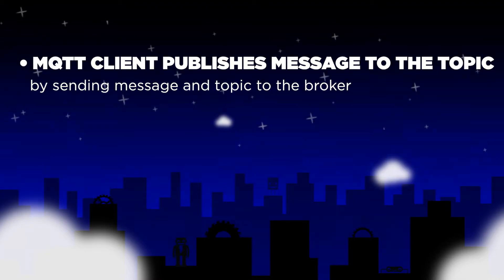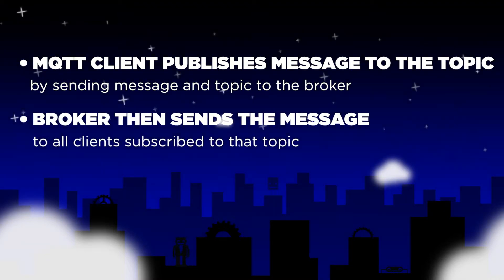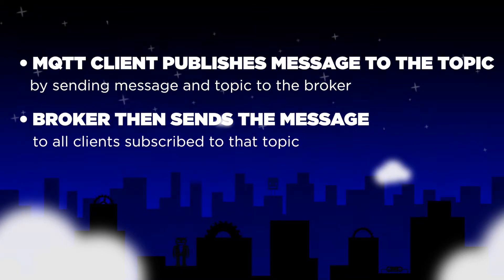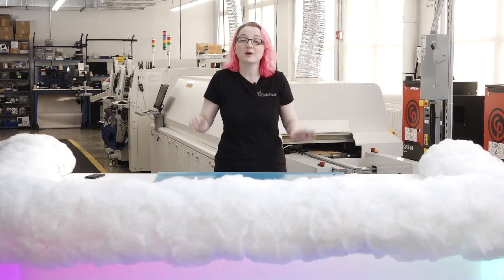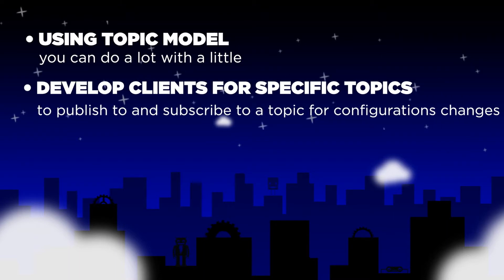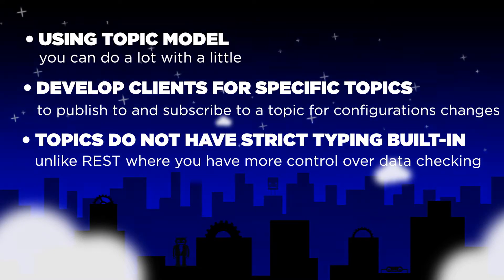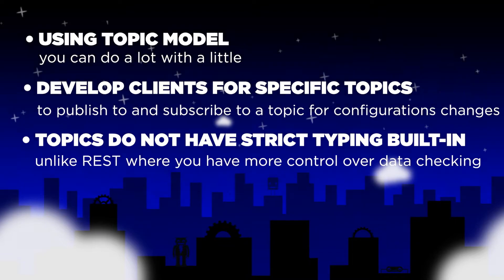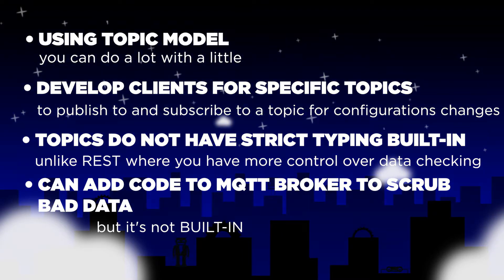An MQTT client publishes messages to a topic by sending the message and the topic to the broker. The broker then sends that message to all the clients that have subscribed to the topic. That's how MQTT works. Using the topic model, you can do a lot with a little. For example, you can develop MQTT clients to only use specific topics to publish and subscribe to when you want to have configuration changes, not just data. One thing to note is that topics don't have strict typing built in — there's nothing stopping a client from uploading a binary cat photo to a temperature topic. This is unlike REST, JSON, and XML where you can have more control over data checking. You can add code to your MQTT broker to scrub bad data out, but it's not built in, and this is one of those trade-offs of a lightweight protocol.